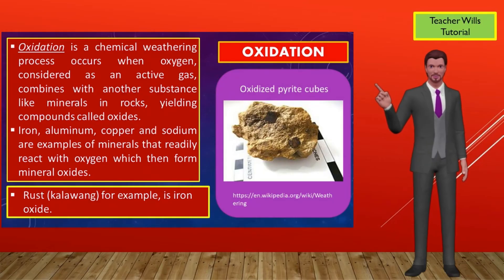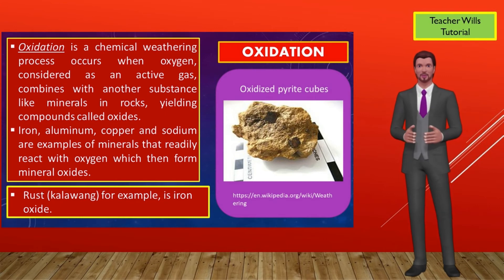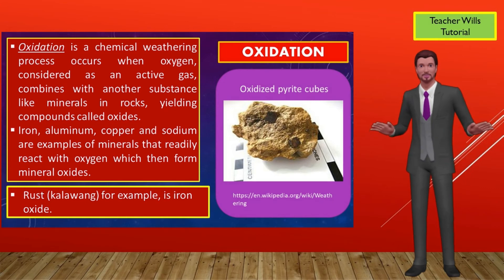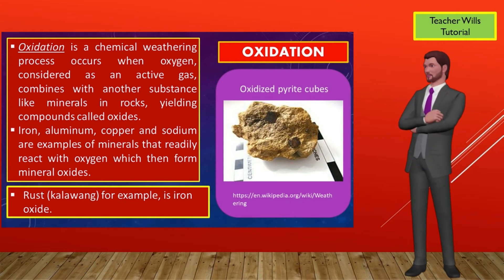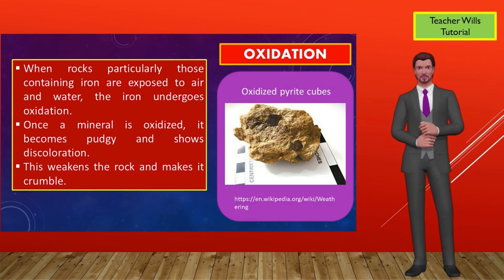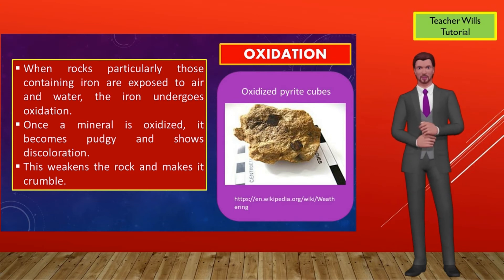Oxidation is a chemical weathering process that occurs when oxygen — an active gas — combines with another substance like minerals in rocks, yielding compounds called oxides. Iron, aluminum, copper, and sodium are examples of minerals that readily react with oxygen to form mineral oxides. Rust, for example, is iron oxide. When rocks containing iron are exposed to air and water, the iron undergoes oxidation. Once a mineral is oxidized, it becomes soft and shows discoloration, which weakens the rock and makes it crumble.